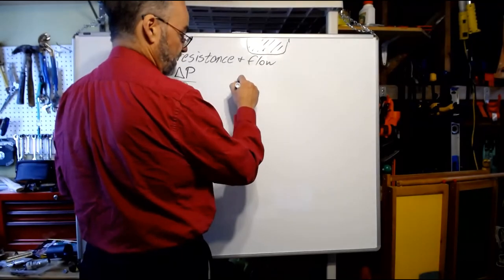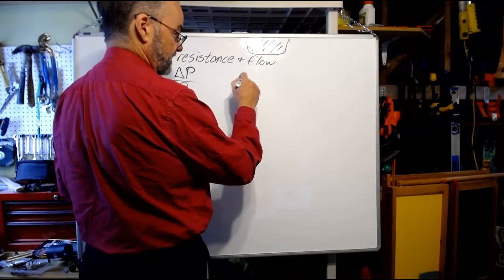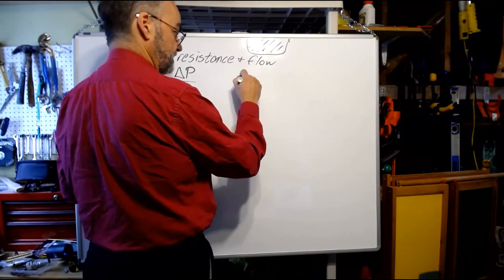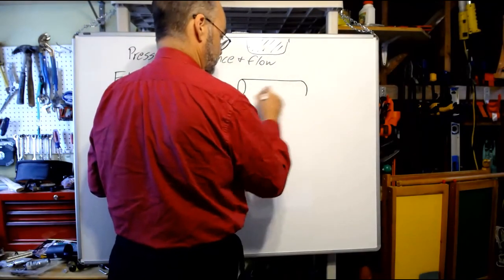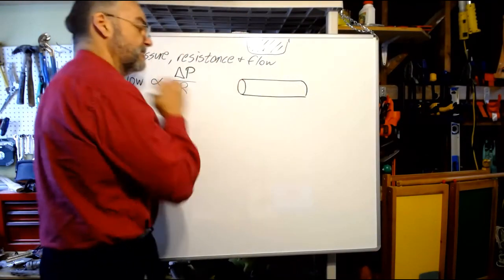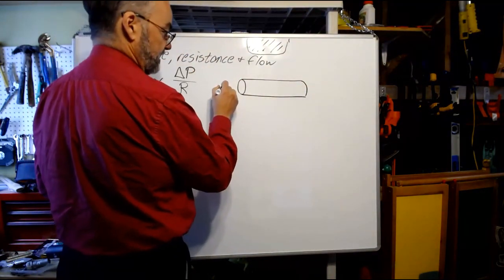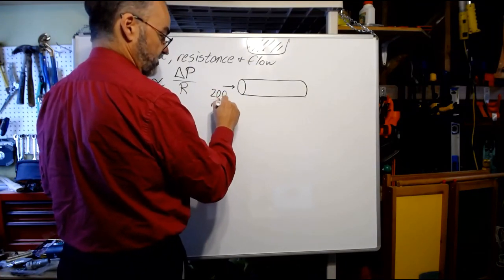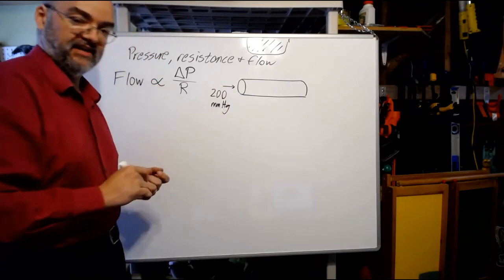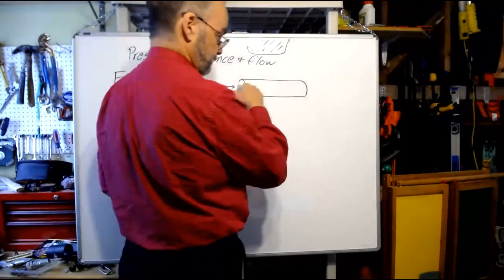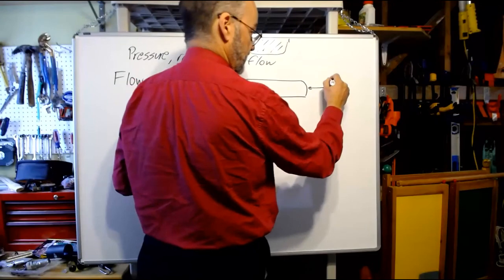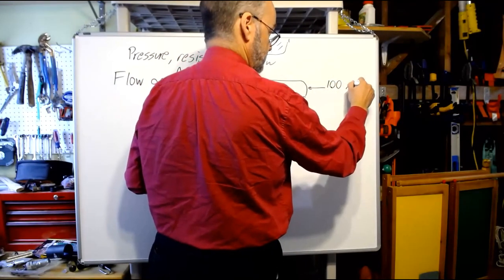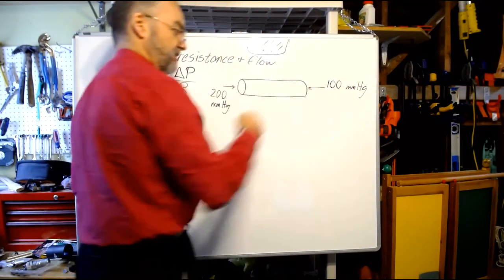So, what I want you to imagine is if I've got a tube here, let's say I'm applying a pressure of 200 millimeters of mercury to this side of the tube, to the fluid in this tube, and then 100 millimeters of mercury to that side of the tube.